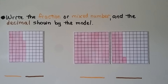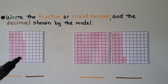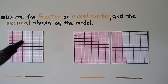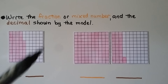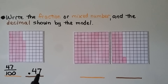We need to write the fraction and the decimal shown by the model. When we look at this model, we know there are 100 parts in all. We can count by tens — 10, 20, 30, 40 — then 41, 42, 43, 44, 45, 46, 47. So 47 of these parts are shaded out of 100. We can write that as a fraction: 47 hundredths. We can write it as a decimal: decimal point, 4 in the tenths place, 7 in the hundredths place. We have 0.47, or 47 hundredths.